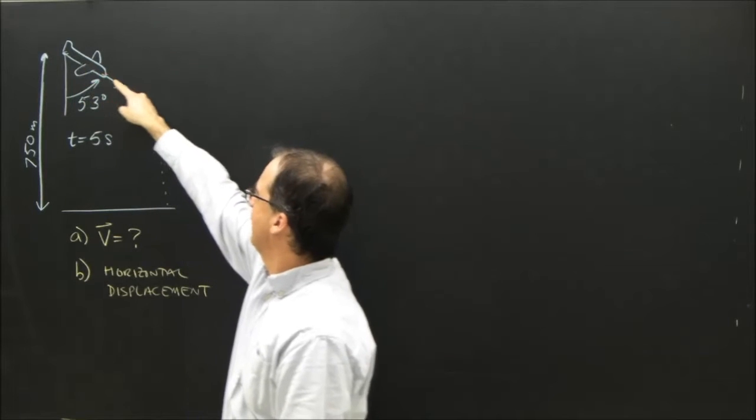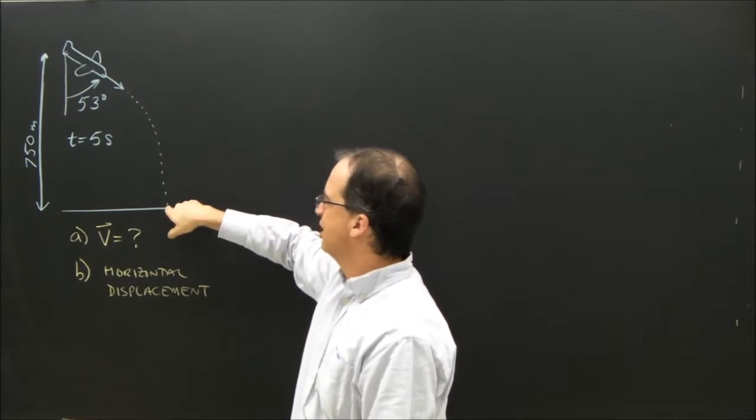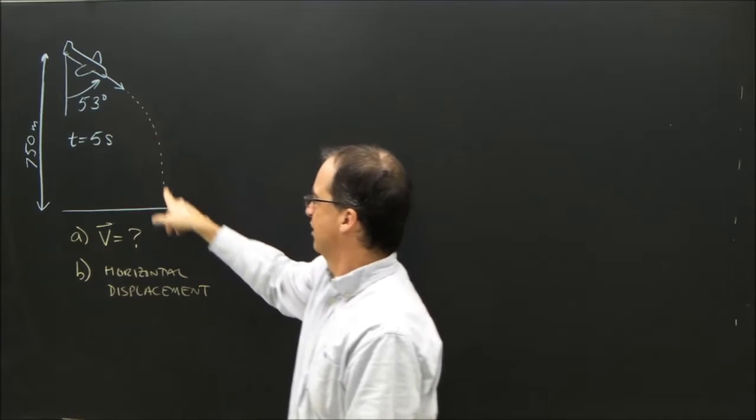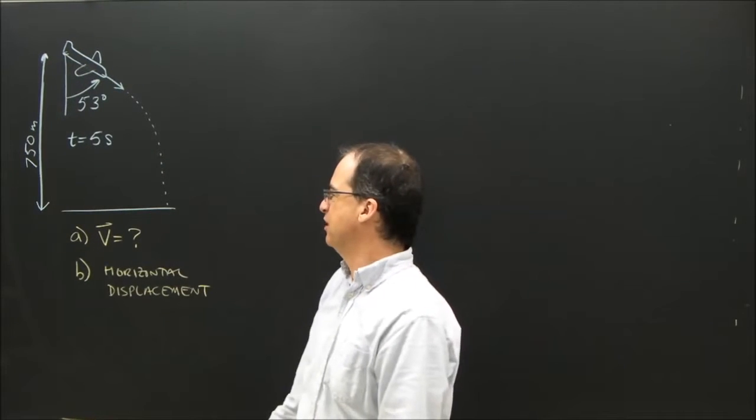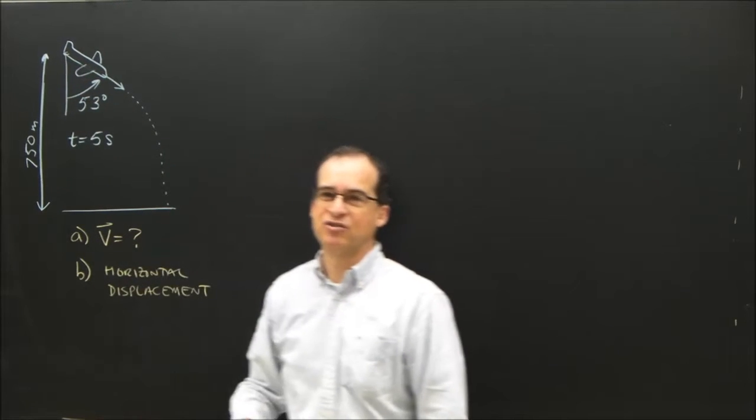It drops something, and that object, or bomb, or whatever, hits the ground five seconds later. So it goes like this. The airplane is 750 meters up in the air. And the question is, how fast was the airplane traveling?